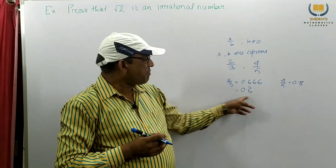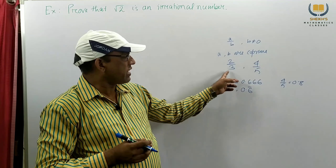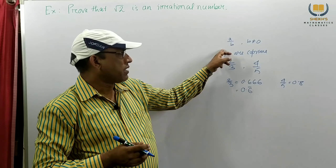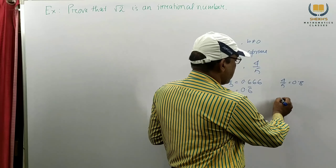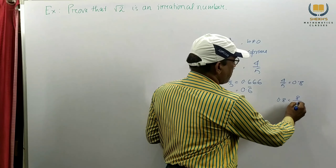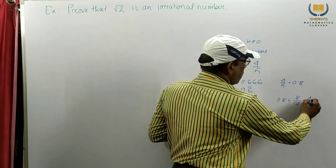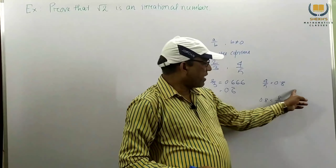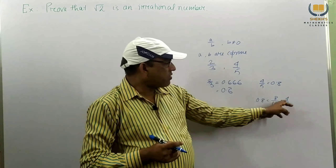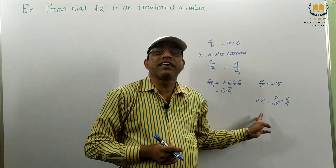A rational number is one we can express in A by B form. Suppose 0.6 is given — we can express 0.6 in the form of 2 by 3, that means A by B form. And 0.8 — if we remove the decimal point, then we get denominator 10. Dividing by 2, we get 4 by 5. So 0.8 we can express in A by B form. So this is a rational number.